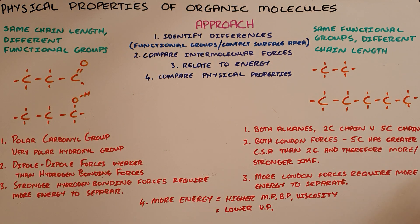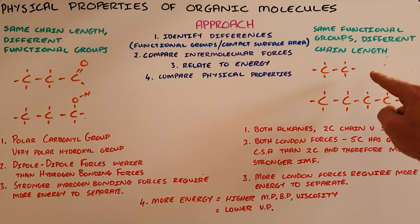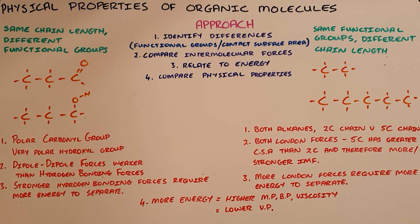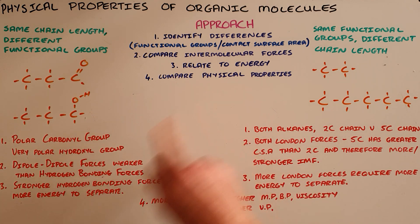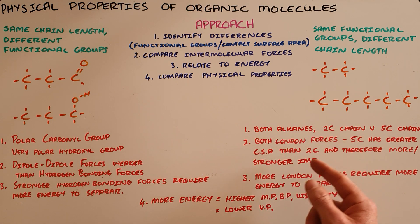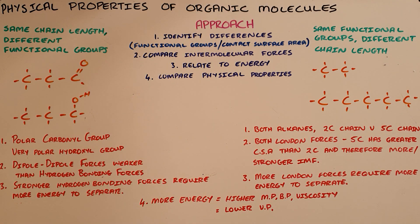The second type of question is one where you have two or more molecules that have the same functional groups but different chain lengths. Here I have an example of a hydrocarbon with two carbons and a hydrocarbon with five carbons in its chain. The first step is to identify the differences — they are both alkanes, but one is a two-carbon chain and the other is a five-carbon chain. The second step is to compare the intermolecular forces: since they are both hydrocarbons, they both have London forces. However, since the five-carbon chain has a greater contact surface area than the two-carbon chain, it would have stronger intermolecular forces.